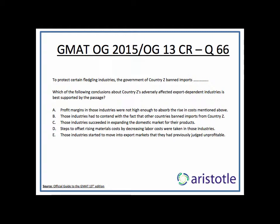Option C says those industries succeeded in expanding the domestic market — we have no idea; most likely they did not succeed, they're actually struggling. Option D says steps to offset rising material costs by decreasing labor costs were taken — the argument makes no such mention. Option E says those industries started to move into export markets that they had previously judged unprofitable — we still have no idea. From the options given, A is the best one that can be inferred and should be the answer.